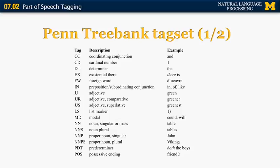JJS is a superlative adjective, for example 'greenest.' Similarly, NN stands for a singular noun like 'table,' NNS for plural noun like 'tables,' NNP for proper singular noun such as 'John,' and NNPS for plural proper noun such as 'Vikings.'